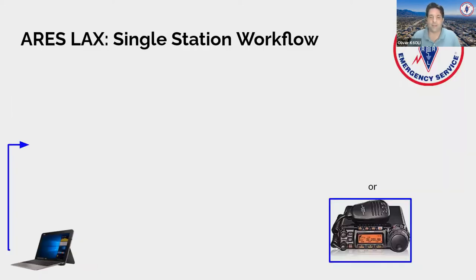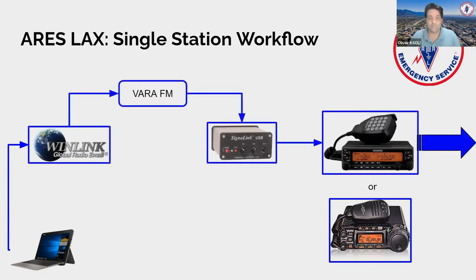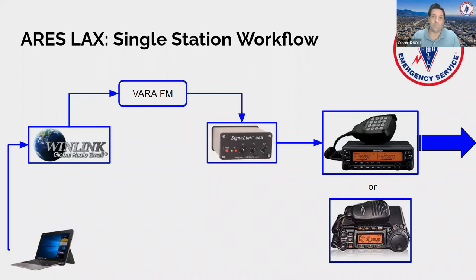What do you need to set it up? You need a computer running WinLink, which logs into the modem — VARA-FM in this case. VARA-FM then modulates the information, and your SignalLink turns that into audio and sends it out via the radio. On the receive side it works in reverse: the SignalLink picks up the signal, feeds it into VARA-FM which demodulates, then sends it to WinLink and you have your message. It works the same on VHF, UHF, and HF.